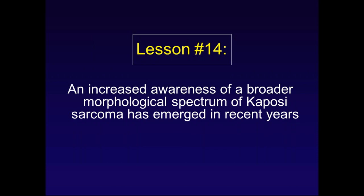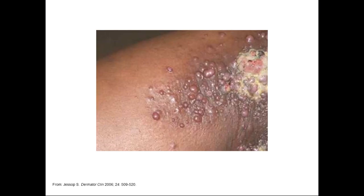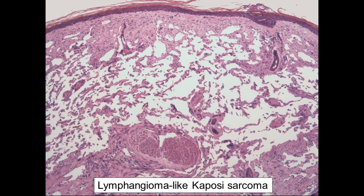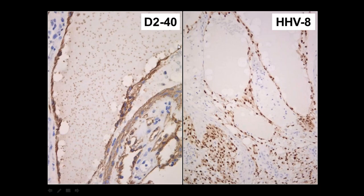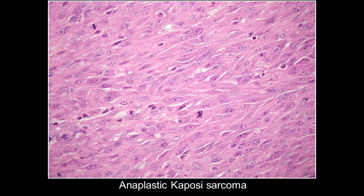There is an increased awareness of a broader spectrum of Kaposi sarcoma clinical and histological variants. The lymphangioma-like variant is probably the one we see most often — if you're not aware of it, it's easy to diagnose it as some sort of lymphatic tumor. These great lymphangioma-like spaces with ectatic spaces containing frothy fluid that looks like lymph marks with podoplanin, but the HHV-8 immunostain confirms it's an HHV-8 related process — lymphangioma-like Kaposi sarcoma. Anaplastic or pleomorphic Kaposi sarcoma is very uncommon but can catch one out because it doesn't look obviously vasoformative — it looks like a solid spindle cell proliferation that is mitotically active.